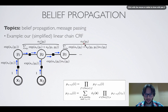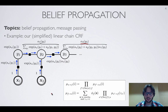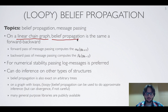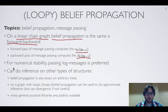To sum up: for the linear chain graph, belief propagation is the same as the forward-backward algorithm. The forward pass computes the alpha table and the backward pass computes the beta table. For similar reasons of numerical stability, we usually implement a version that passes log messages, which is more numerically stable.